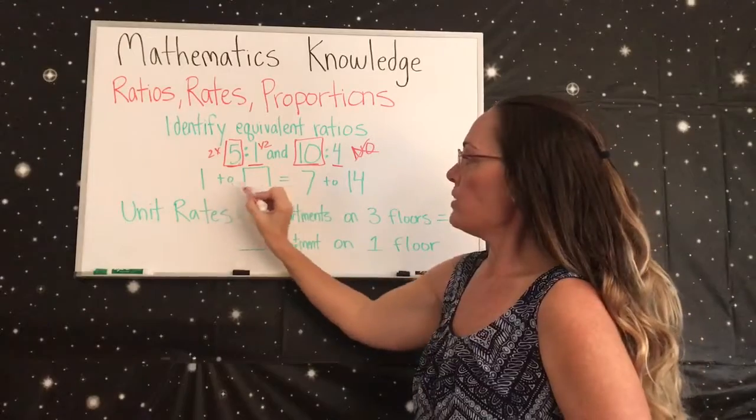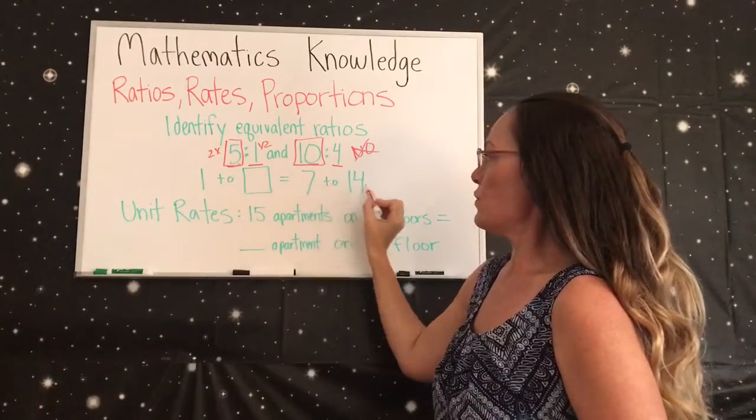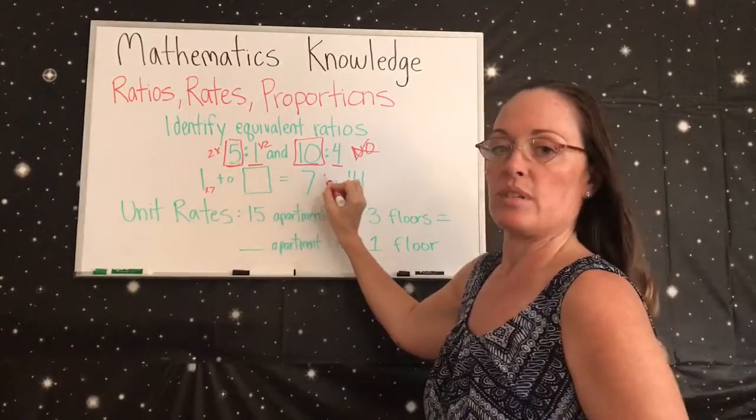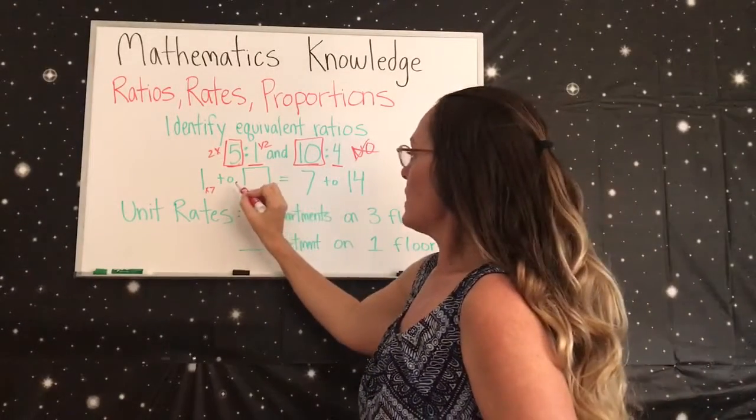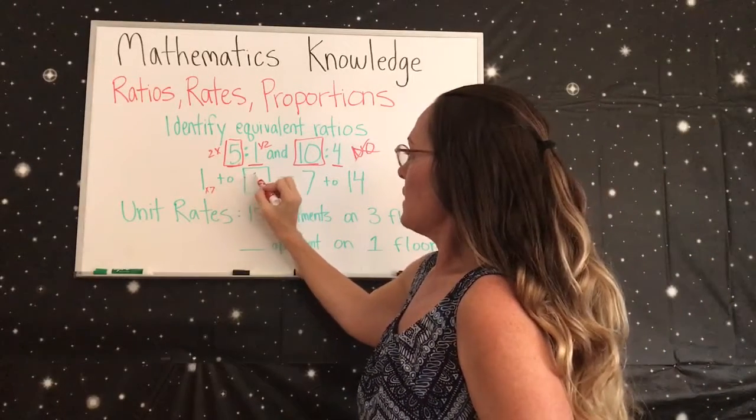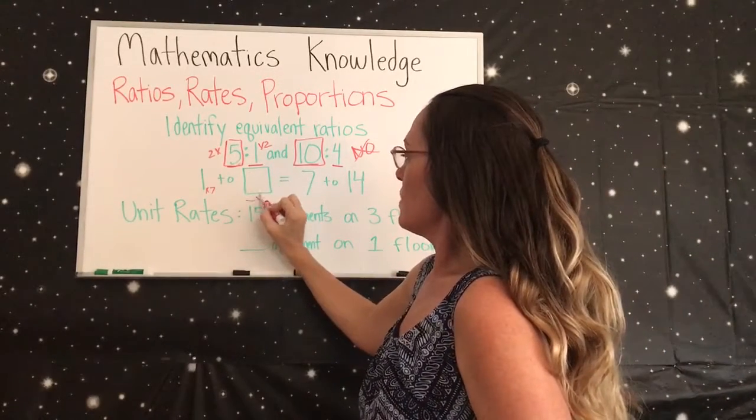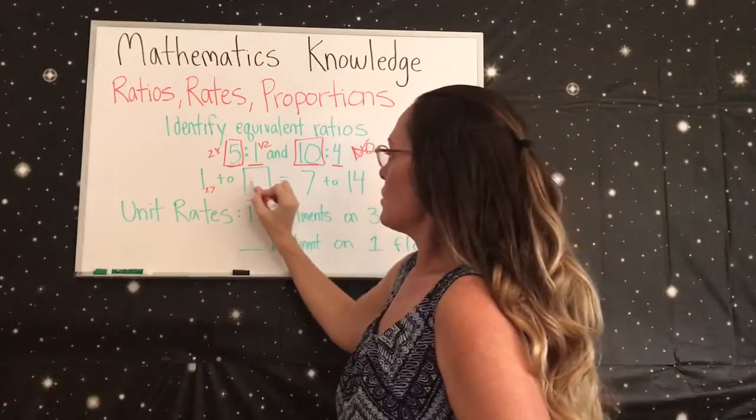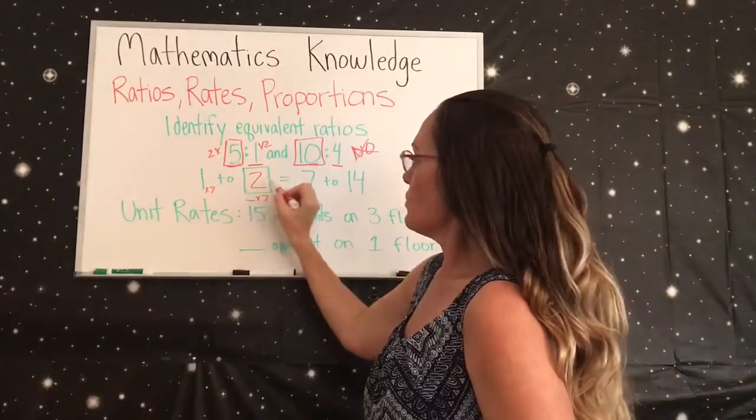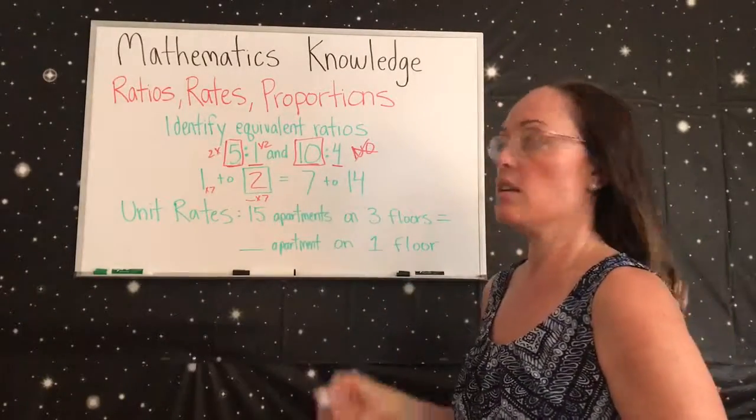Here we have 1 to blank equals 7 to 14. So with the 1, we did times 7 to get that equal to the 7 on this side. So here, what did we do? We did blank times 7 to get 14, so then that would be 2. And that does work because 2 times 7 is 14, so yes, these are equivalent.